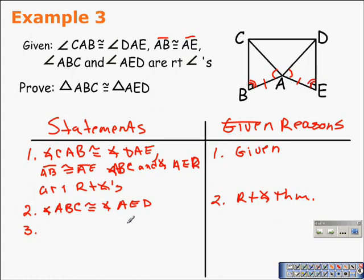We have angle-side-angle in both triangles, so we can finish our proof by saying that triangle ABC is congruent to triangle AED by angle-side-angle.